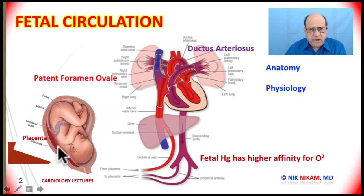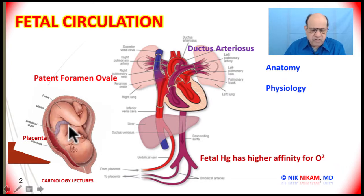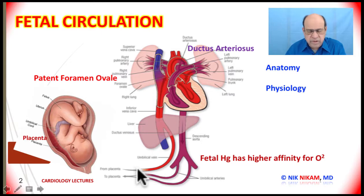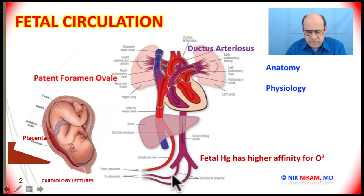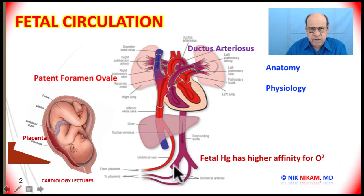The placenta is attached to the uterus, and from the placenta we have the umbilical cord which is connected to the baby. The umbilical cord carries oxygenated blood from the mother through the umbilical vein. The oxygenated blood from the mother is carried from the placenta to the fetal circulation through the umbilical vein, whereas the umbilical arteries arising from the iliac on both sides bring the deoxygenated or mixed venous blood from the fetus to the mother's placenta for oxygenation.